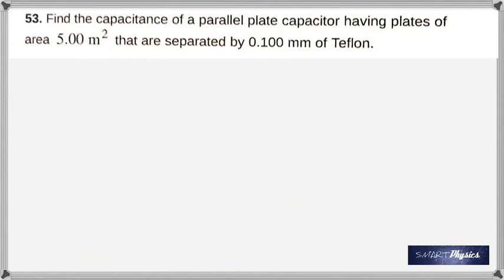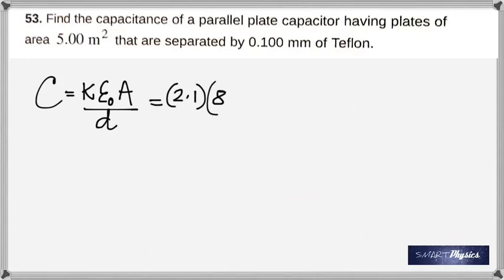Find the capacitance of a parallel plate capacitor having plates of area 5 meter squared that are separated by 0.100 millimeter of Teflon. The insulating substance used here, Teflon, is the substance that you have coated on non-stick pans that works as an insulator. The formula is K epsilon naught A by D. Remember that K here is not 9 times 10 to the 9. It's called the dielectric constant of Teflon, which will be given to you. It is 2.1.